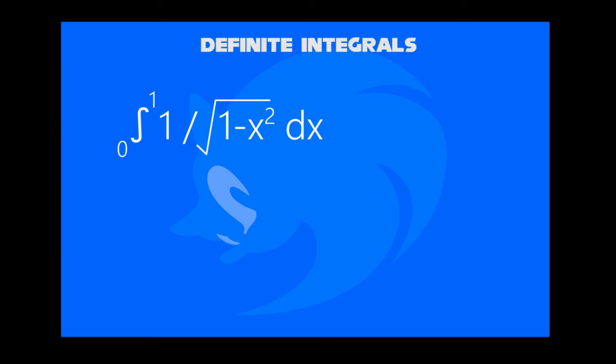Last but not least, inverse trigonometric-based integration. For example, 1 by square root 1 minus x squared dx from 0 to 1. Now we get inverse sine 1 minus inverse sine 0, we get pi over 2 square units.